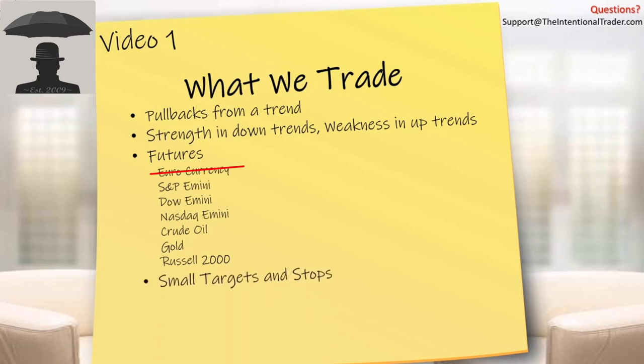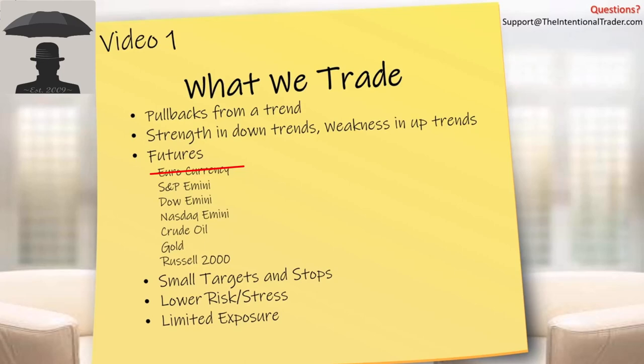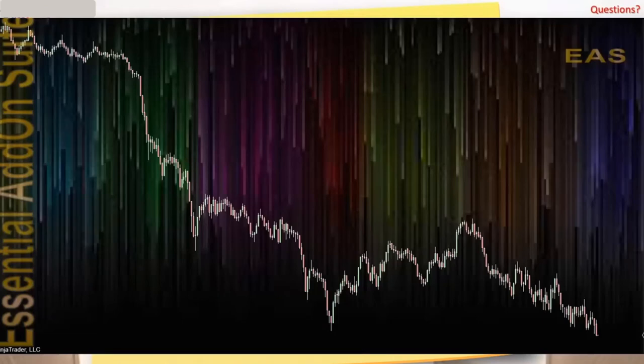There may be a time where we switch those out, but currently these are the instruments we trade in our trade room. We have very small targets and very small stops. We have lower risk and lower stress because of the limited exposure time — the limited amount of time that we allow our money to be exposed to market fluctuations and market makers. We want to get in and out as quickly as possible.